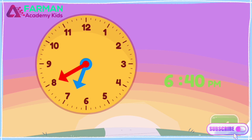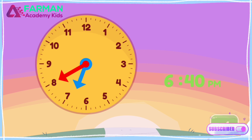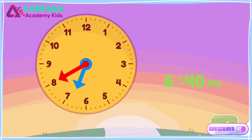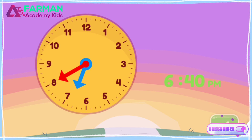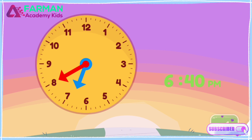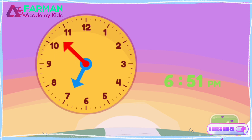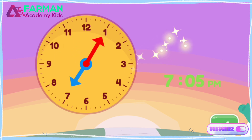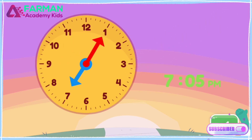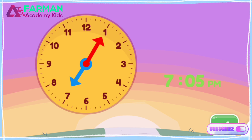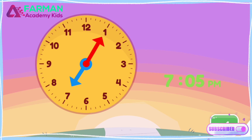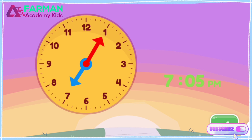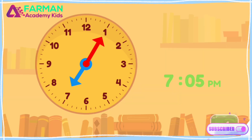Now move the minute hand on the round clock to show 7:05 p.m. You made the clock show 7:05 p.m. It's getting darker and the sun is setting.